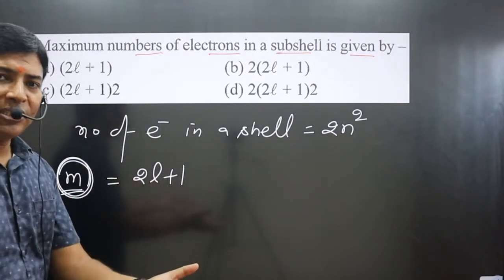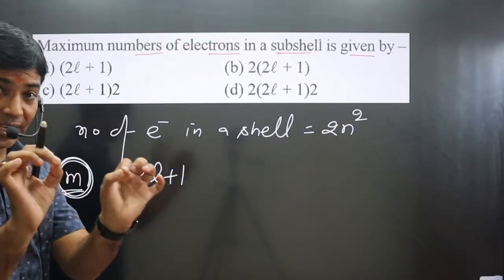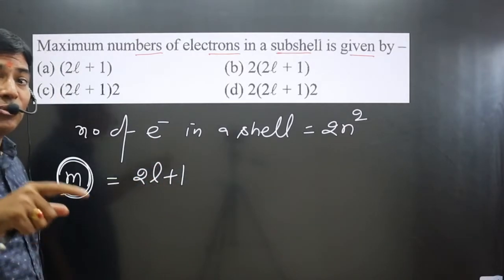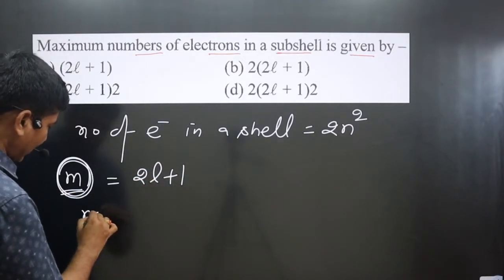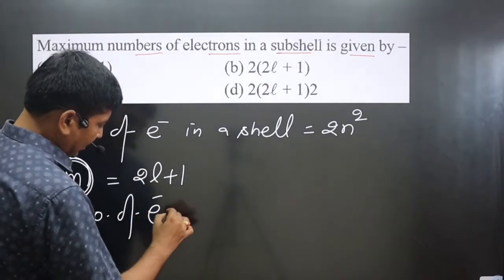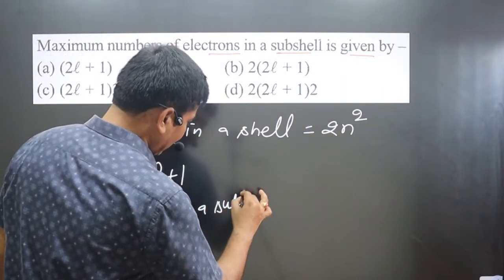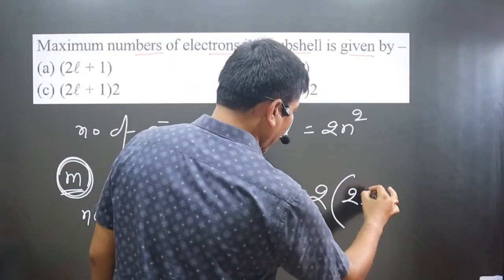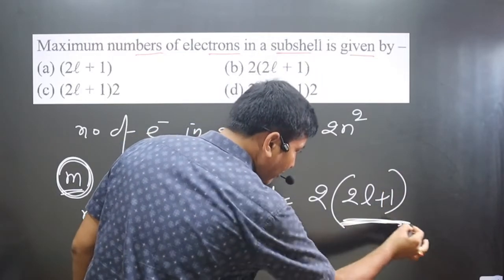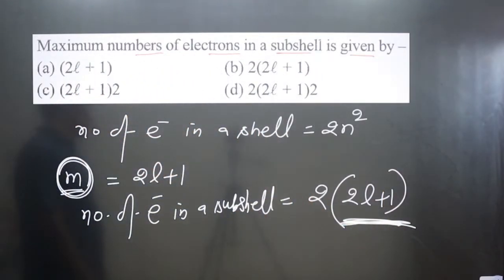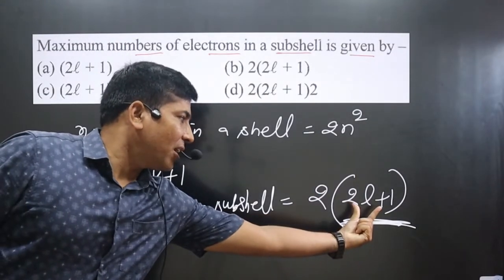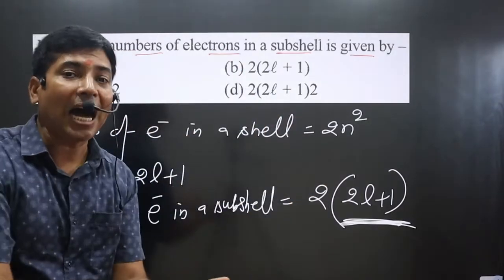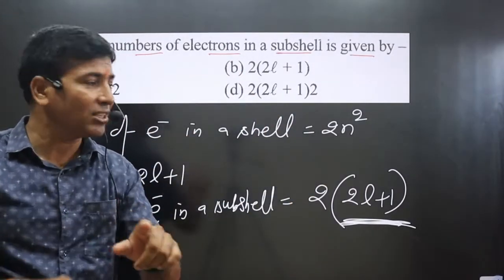In each orbital there are 2 electrons. So if we multiply the number of orbitals by 2, it gives the total number of electrons. Therefore, the number of electrons in a subcell is equal to 2 multiplied by (2L + 1). We decide the orbitals based on the L value.